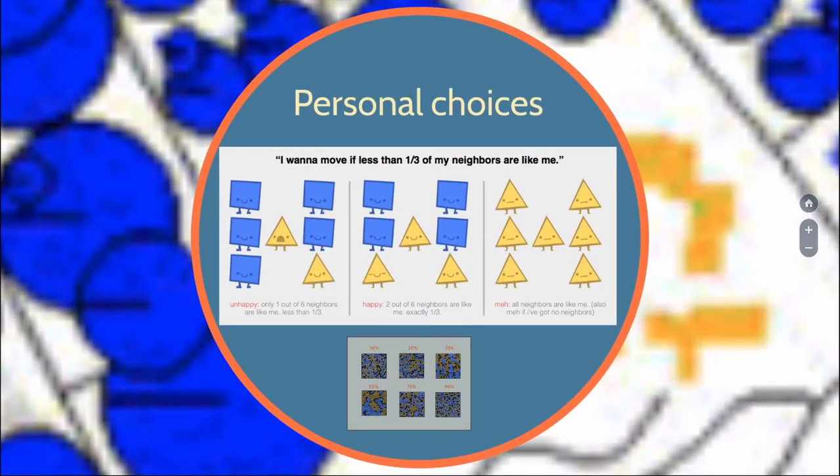Quite a few decades ago, Schelling, who got a Nobel Prize for that, created a model. The model is very simple. You have triangles and squares. You can call them Jews and Arabs, but you might get into a boggy area. They only have one pattern of behavior: they basically have a preference on how many of their neighbors should be the same as them.